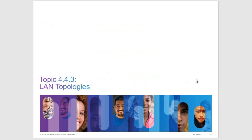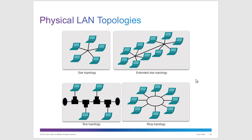For LAN topologies, we have the extended star, the bus (which is rarely used anymore), and the ring topology. WAN uses point-to-point, full mesh, and hub-and-spoke.